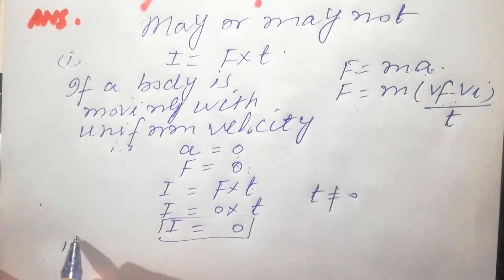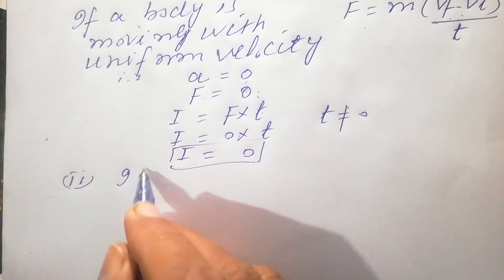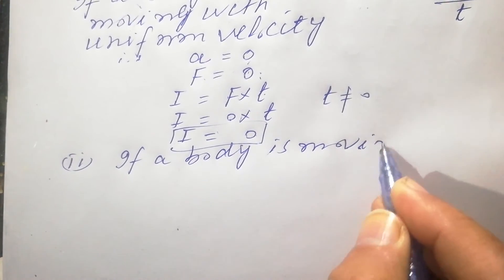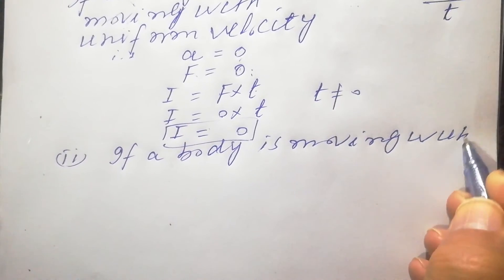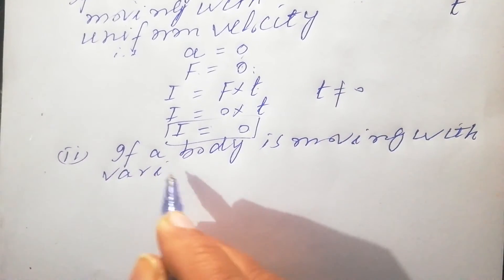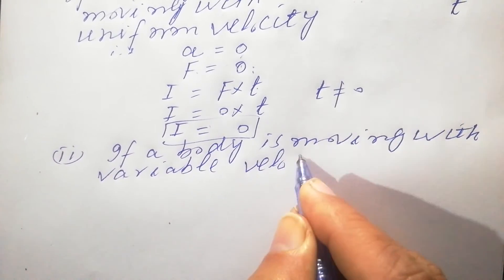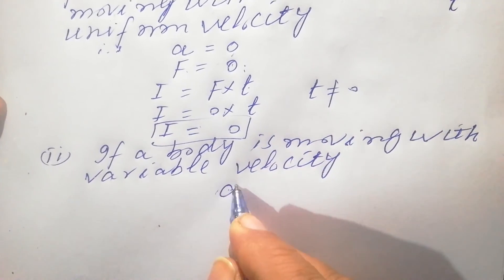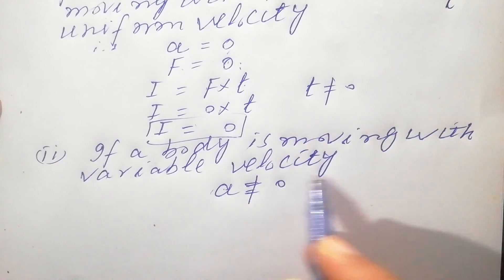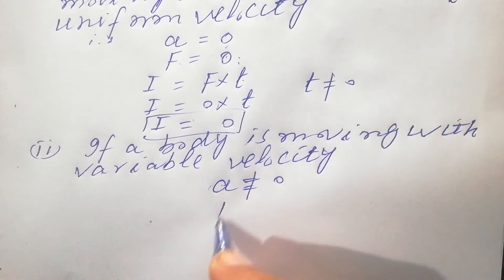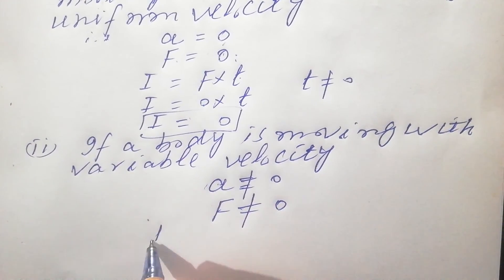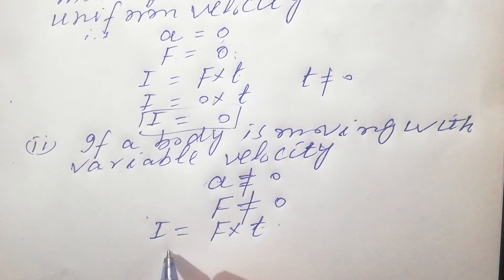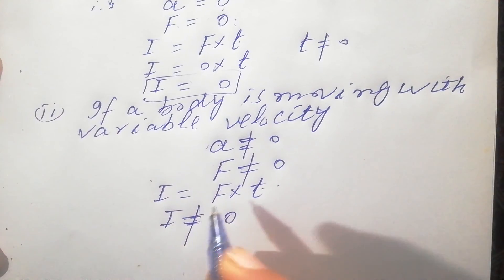Now case number 2: if a body is moving with variable velocity, the velocity is variable, so acceleration is not equal to 0. If a body is moving with variable velocity, acceleration is not equal to 0, so F is not equal to 0. And according to this relation, impulse is equal to F into t. So if F is not equal to 0 and t is not equal to 0, it means impulse is not equal to 0. So this is the right answer. Thanks.